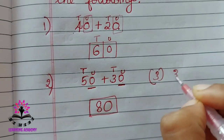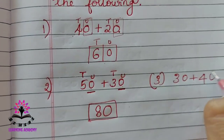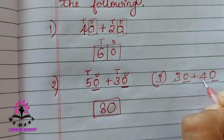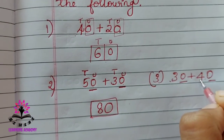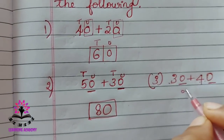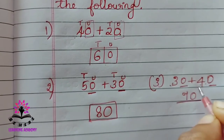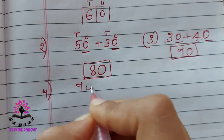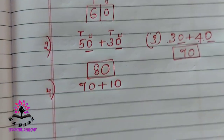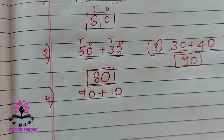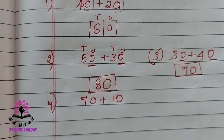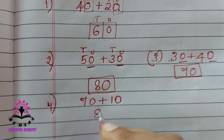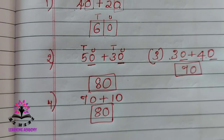One more problem: 30 plus 40. Zero in the unit place for both. Add the tens place: three plus four is seven. Zero in the unit place — it will be 70. So 70 plus 10: zero in the unit place in both cases, seven plus one is eight, zero in the unit place — so 80 is the answer.